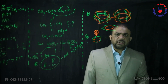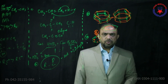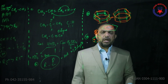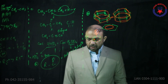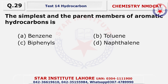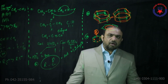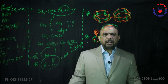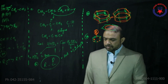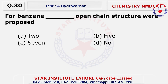Question 28: for halogenation of benzene, normally diffused sunlight is used, and the product formed is hexabromocyclohexane. Question 29: the simplest and parent member of the aromatic hydrocarbons is obviously benzene, since aromatic compounds are based on the benzene ring structure.